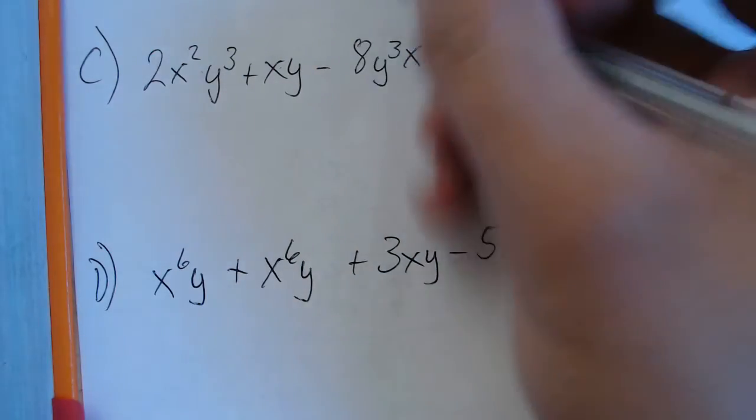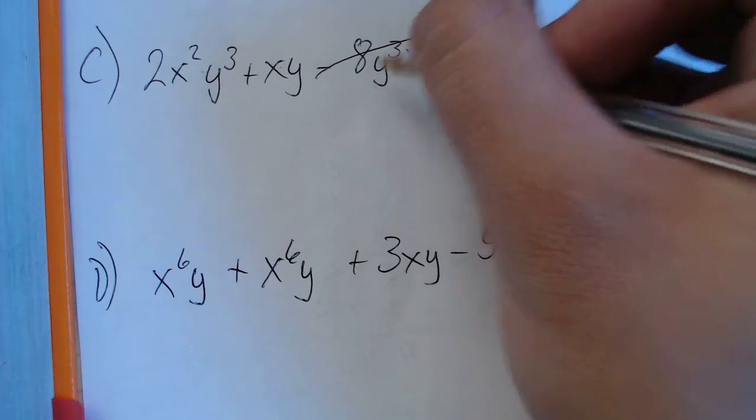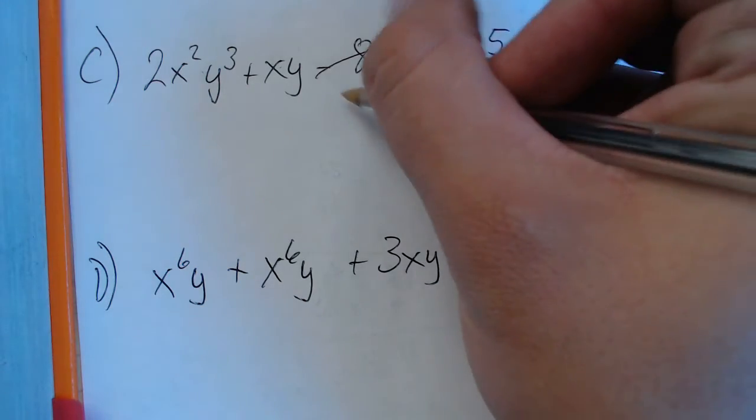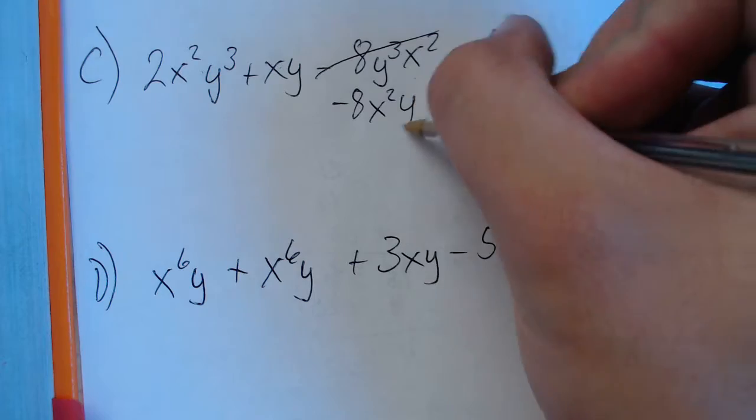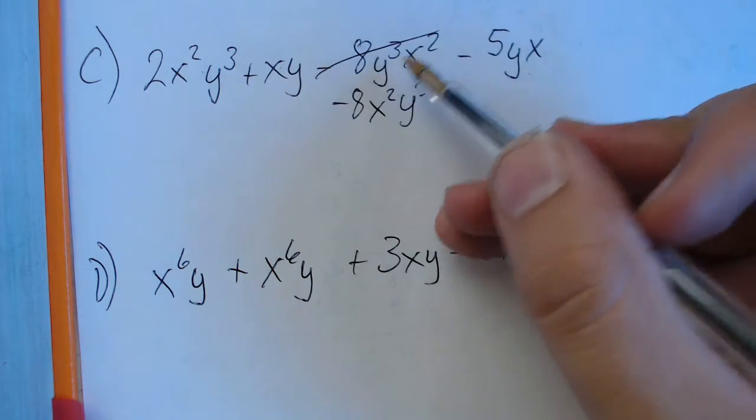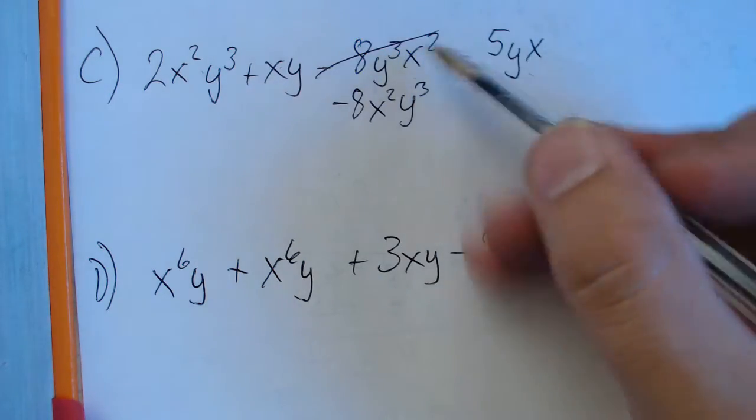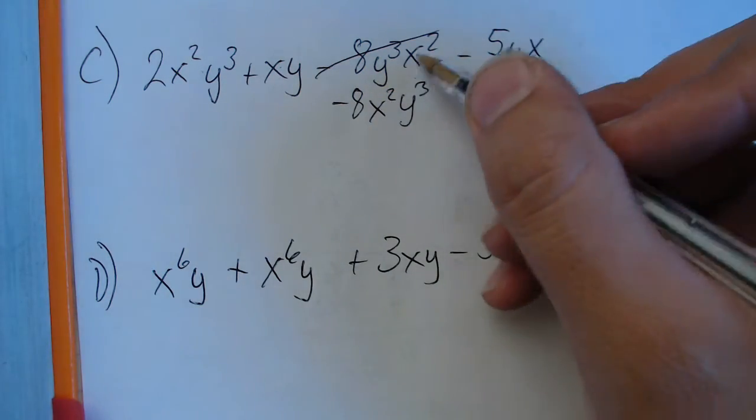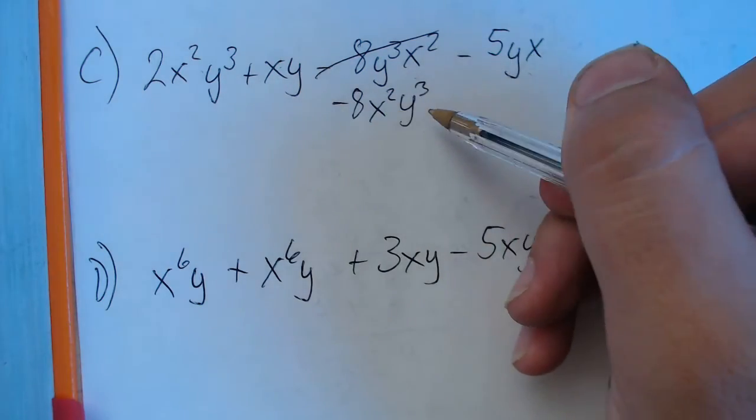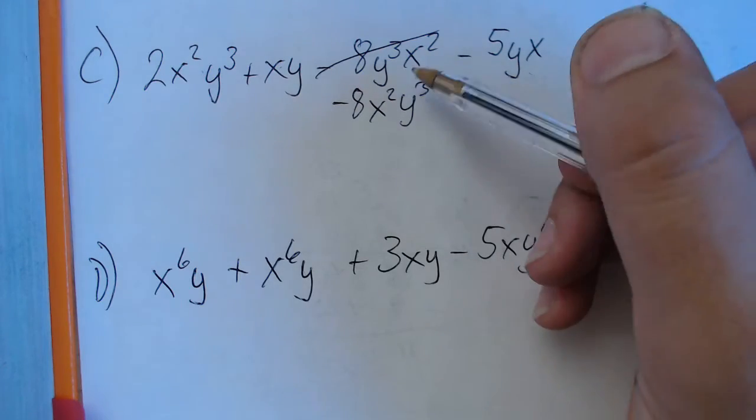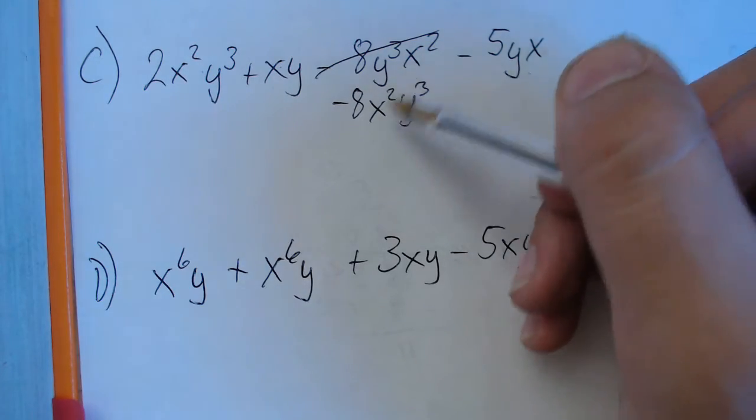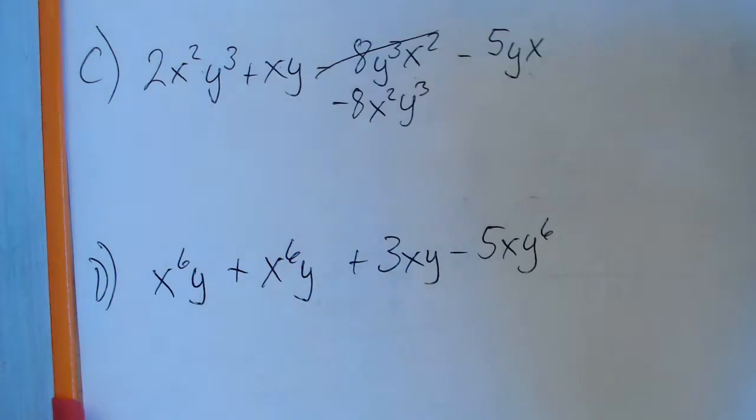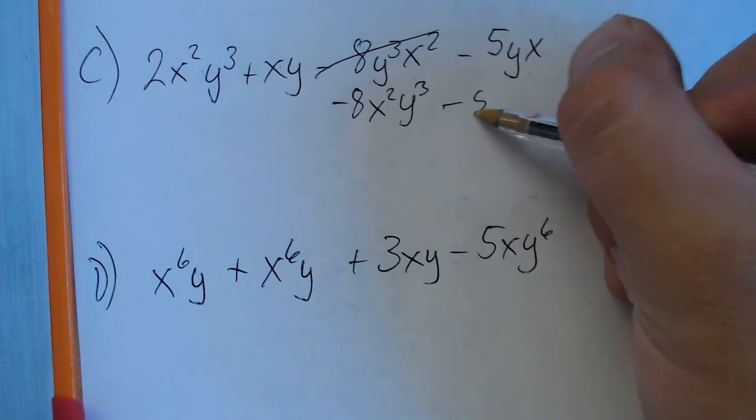So we'll replace negative 8y cubed x squared with negative 8x squared y cubed. And it's very important when you do this that you don't switch the exponents. So the exponent follows the letter. A common mistake would be to write this as x cubed y squared, and that would be incorrect. So each letter keeps its exponent. They're fused together. They can't be separated. And then this one would be minus 5xy.